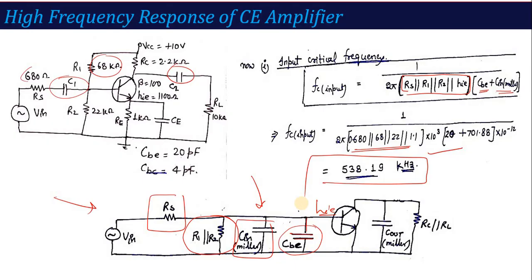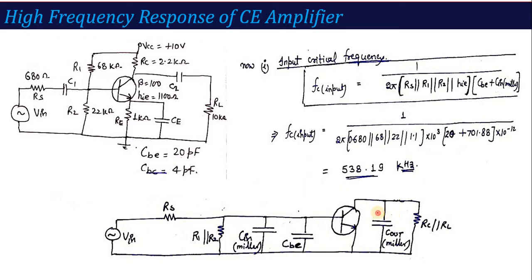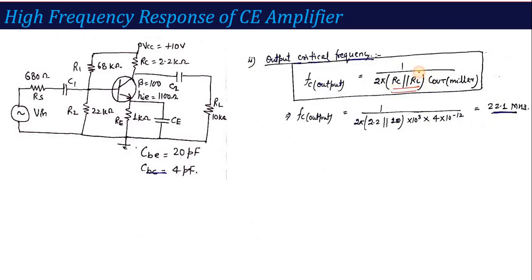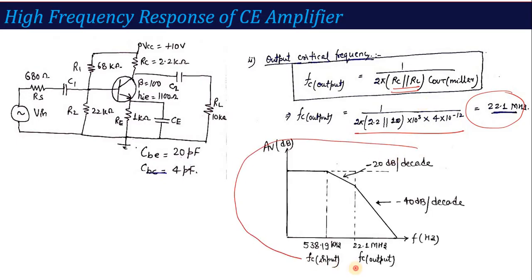For the output side, the critical frequency is also f = 1 / (2π R C), where R = RC || RL and C = C_out(Miller). Substituting these values gives the output cutoff frequency. Using both these cutoff frequencies, the frequency response can be plotted: beyond the input cutoff frequency, gain rolls off at −20 dB/decade, and beyond approximately 22.1 MHz, it decreases at −40 dB/decade.